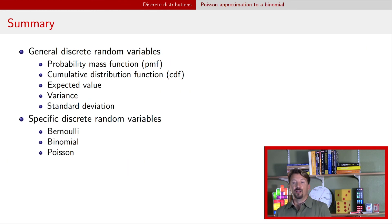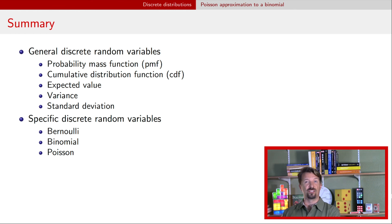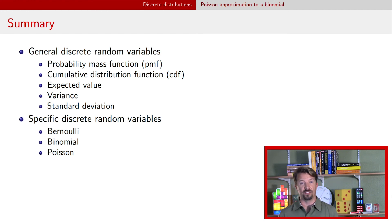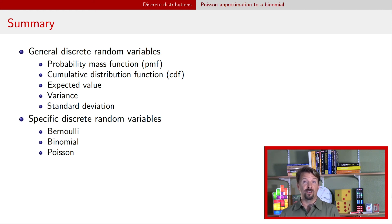This was the fifth video in a five-video series. We covered discrete random variables — discrete versus continuous, probability mass functions, cumulative distribution functions, expected values, variance, and standard deviation — and then looked in depth at Bernoulli, binomial, and Poisson random variables, because those are the most common discrete distributions used to model real-world data. The next set of videos will be on continuous random variables, covering uniform distributions and importantly the normal distribution. Hope to see you there.